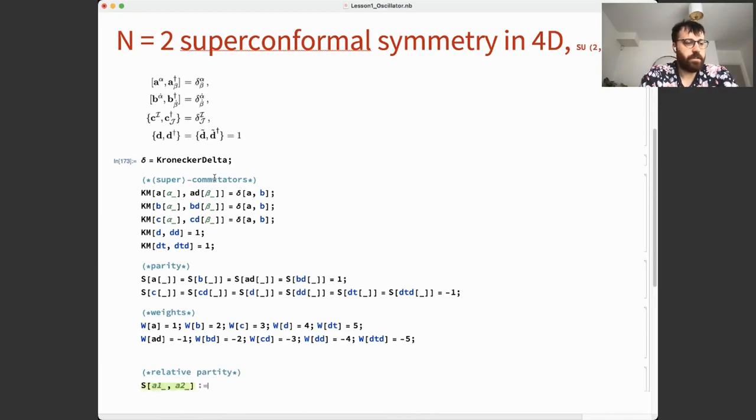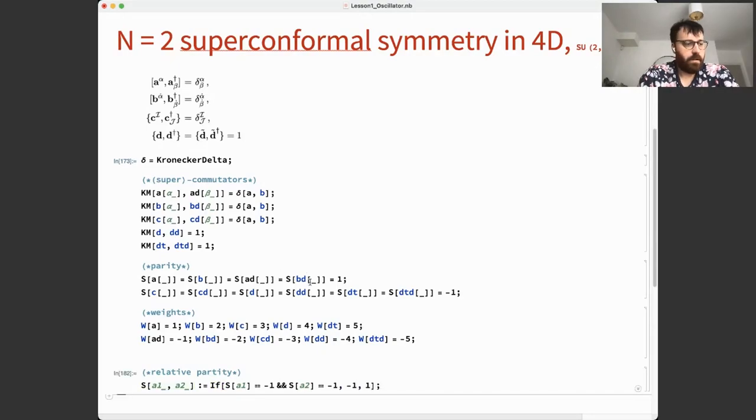We need a relative parity function. I want to define a function which tells the sign in a super commutator. Between boson-boson, boson-fermion is plus, and fermion-fermion is minus one. If S of A1 is minus one and S of A2 is minus one, then it is minus one, otherwise it's one.